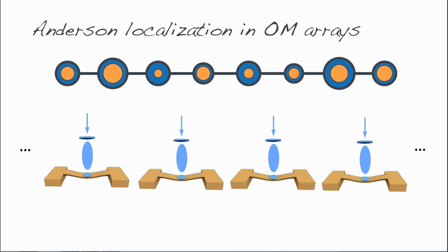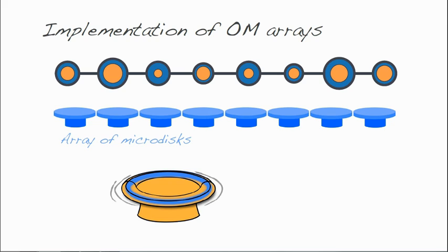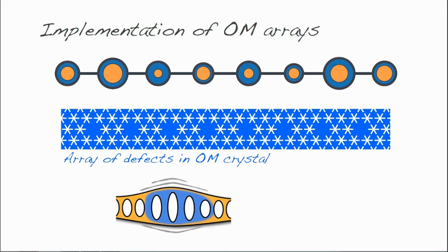An example of a scalable platform is based on optomechanical microdiscs. The first small-scale optomechanical array of this type has been recently demonstrated by the group of Michal Lipson. Even greater potential for scalability is offered by optomechanical crystals.